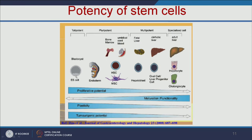Totipotent embryonic stem cells can give any kind of cell. Pluripotent or multipotent cells can give multiple types of cells. Unipotent adult cells — like liver stem cells — can only give liver cells such as hepatocytes. We can use stem cells and, depending on the growth factors or hormones added, differentiate them into liver cells or kidney cells.